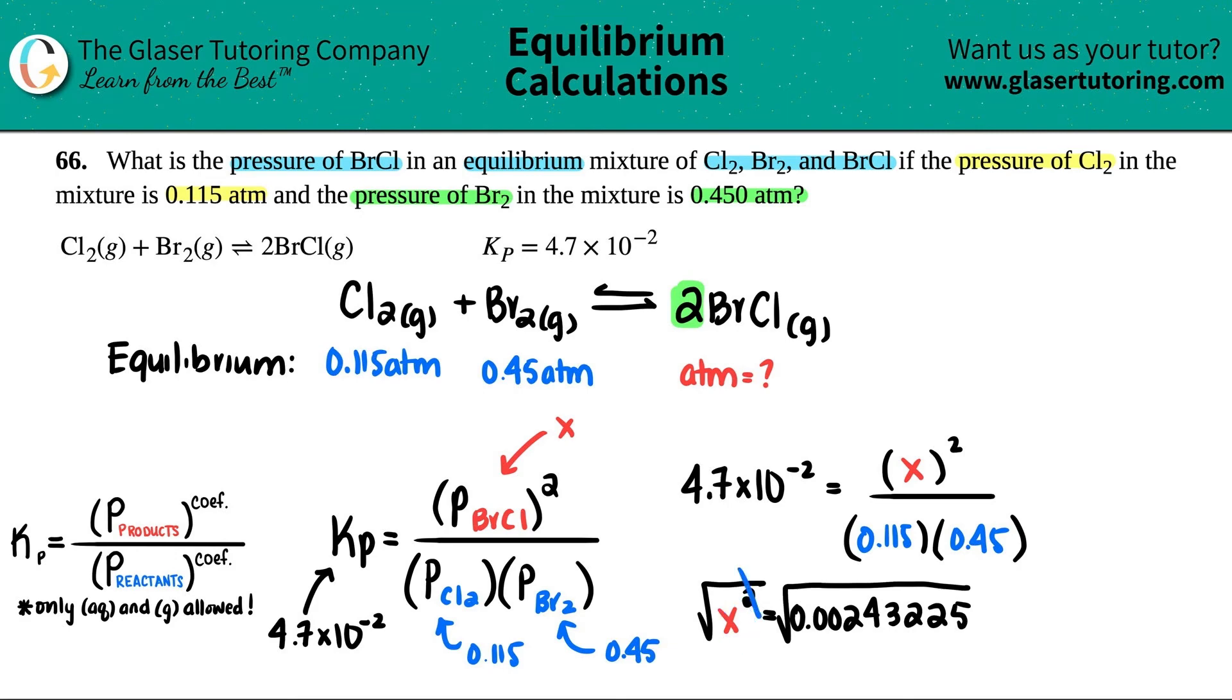x, which was the pressure of BrCl, is going to be in atm. Let's take the square root of that. Looks like I need three sig figs.